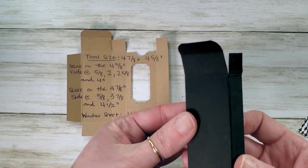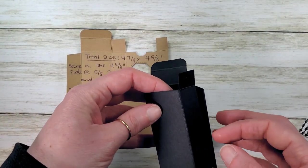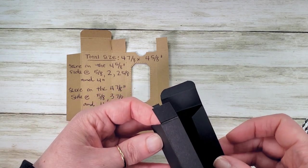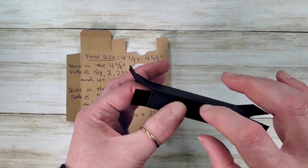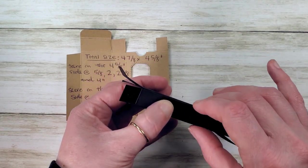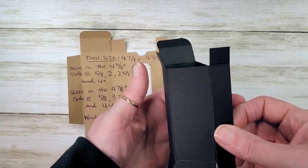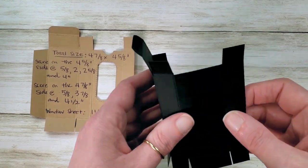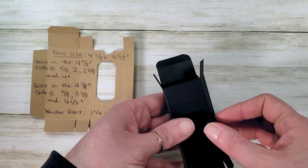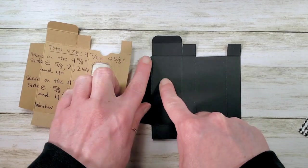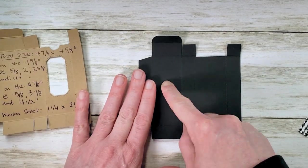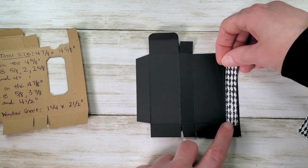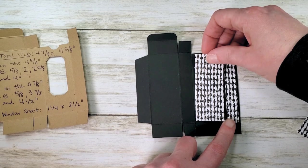Alright, now when we do boxes, we always want to make sure that the adhesive is on the correct side, so that when we fold up, all of our seams go to the back. Do you see that? So we want the seam to go to the back of the box. So this is the front side of our box, which means this side is going to get our designer series paper. We're going to put one piece in each of these panels. This is our glue tab on the left-hand side. So I'm going to grab multi-purpose liquid glue and I'm going to cover this box with the designer series paper.